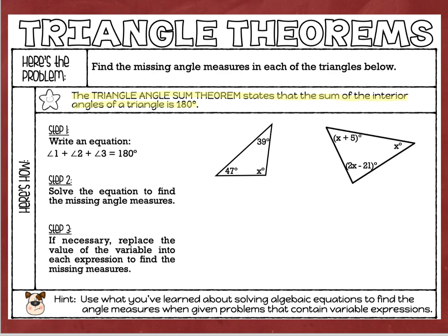The sum of the three angles that make up a triangle are always going to equal 180 degrees. Doesn't matter if it's a big triangle or a little triangle, a fat triangle or a skinny one. When you add those three angle measures together, they're always going to equal 180. The equation on the side in step one is a formal way to use an equation to figure out the missing angle measures. We've got two angles that we know: the 47 degree angle and the 39 degree angle.